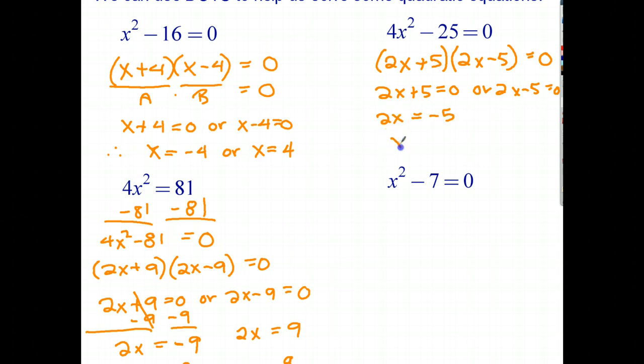Solving these two equations, subtract 5 from both sides and divide both sides by 2. So one solution is x equals negative 5 halves. For this one I add 5 to both sides, and that gives me 2x equals 5, and divide both sides by 2. So x equals 5 over 2. So those are my two solutions to that equation.